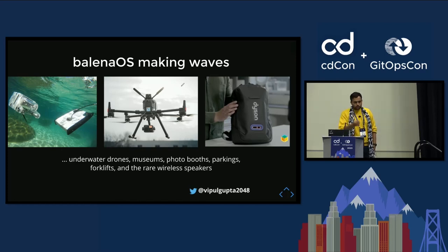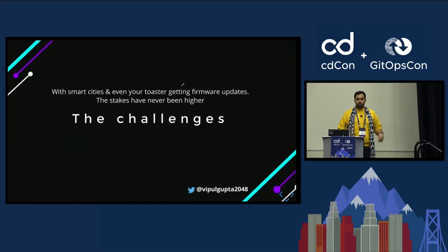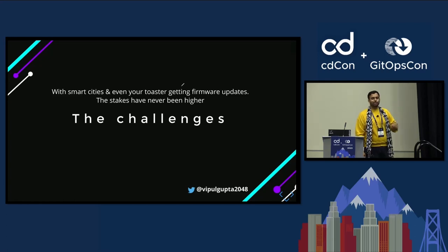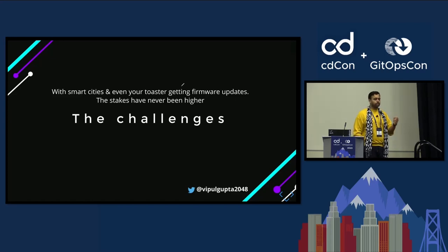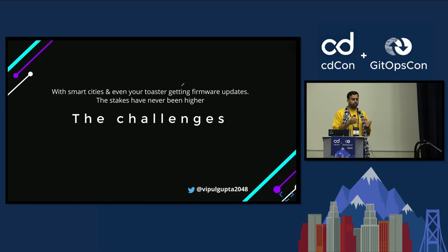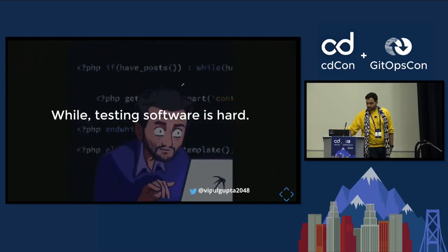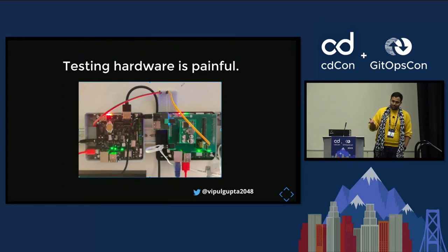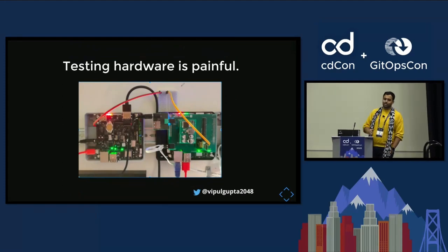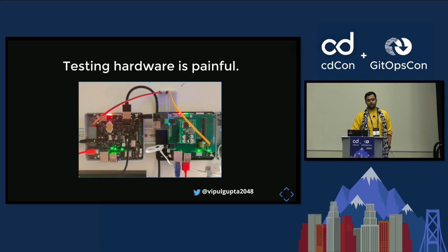The major challenge in building an embedded operating system is the problem of testing it and releasing it — where even your smart toaster will have firmware updates. You have to be very careful about what you're releasing. You need to make sure it's fault tolerant and completely reliable before releasing. Testing software is quite hard, but testing software on hardware is downright painful. There is no standardization, no open source framework available, and that's what we are trying to solve.